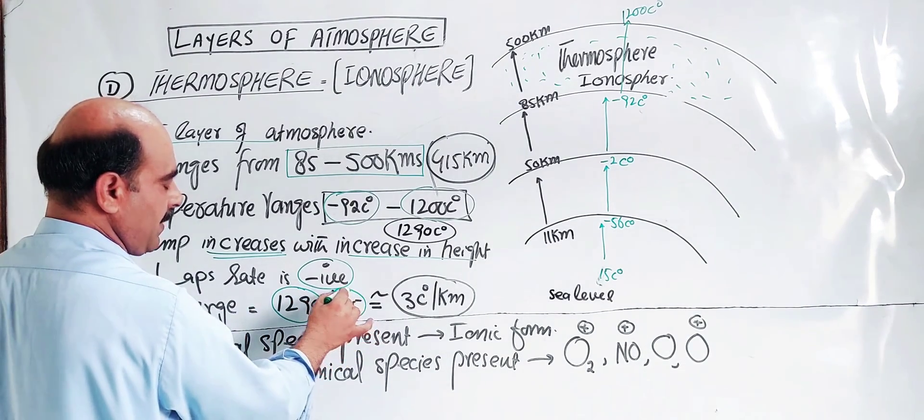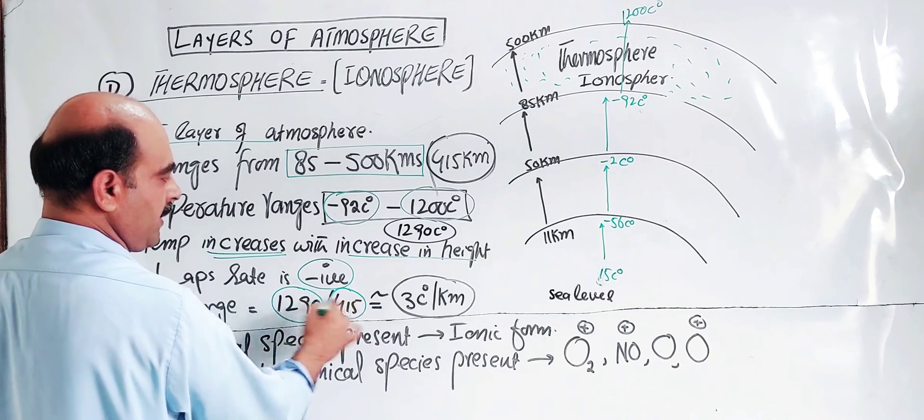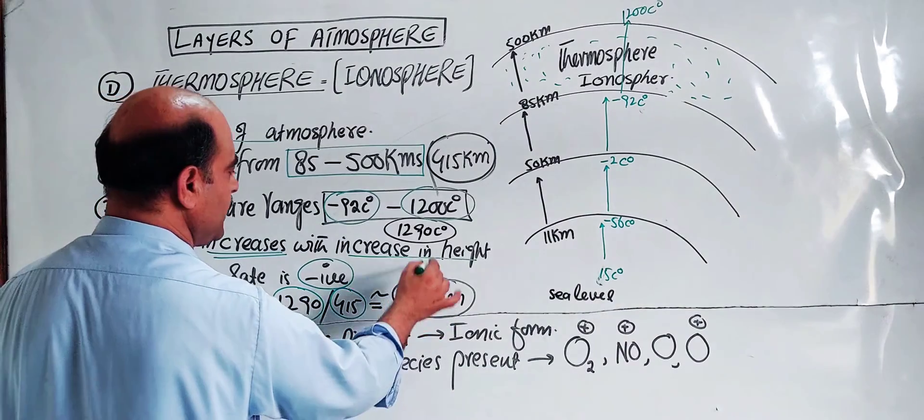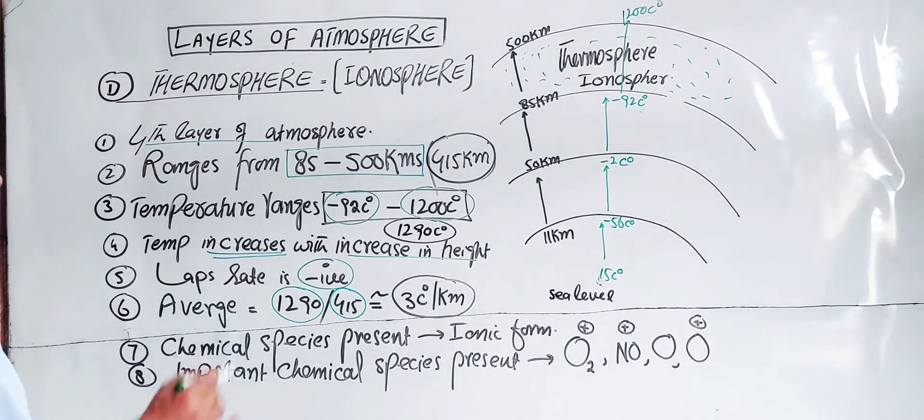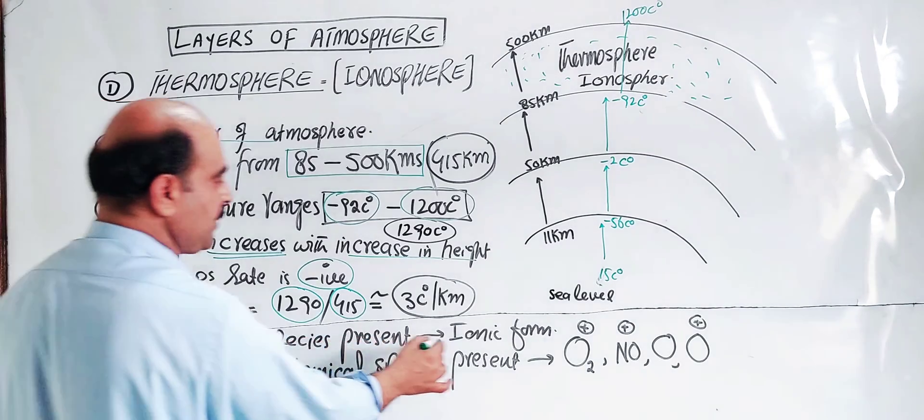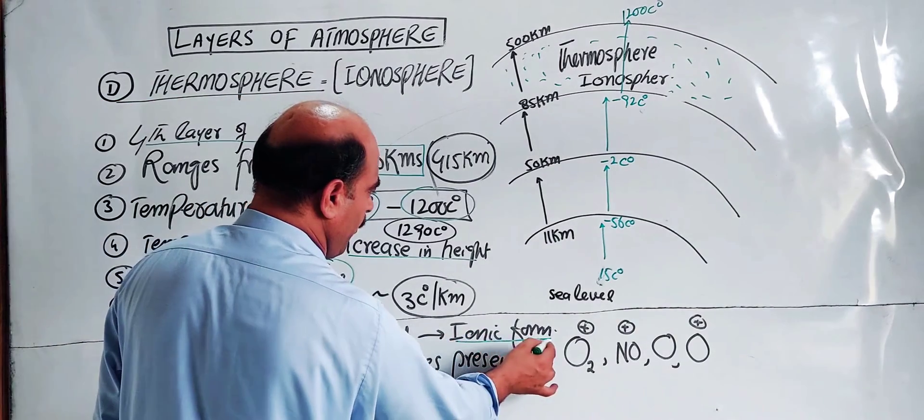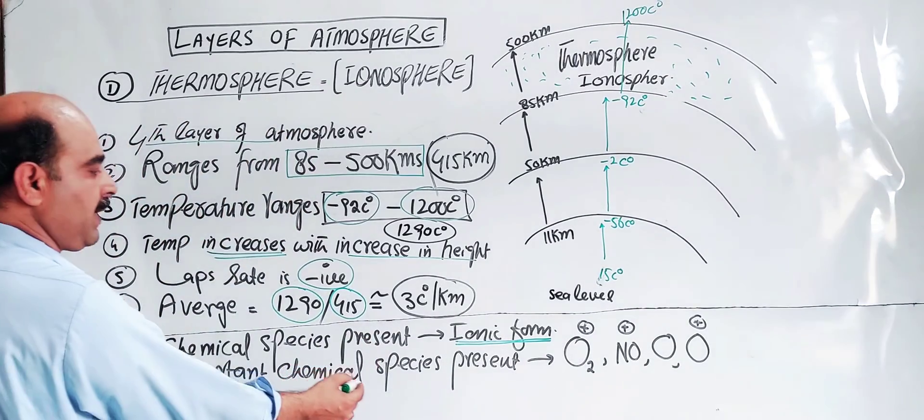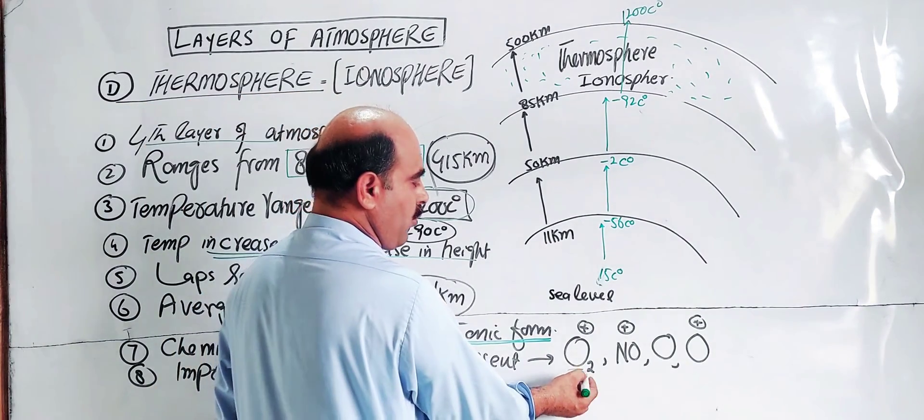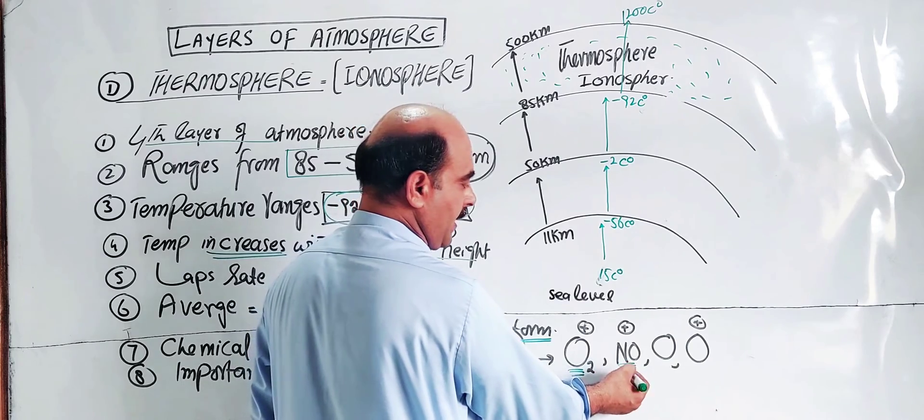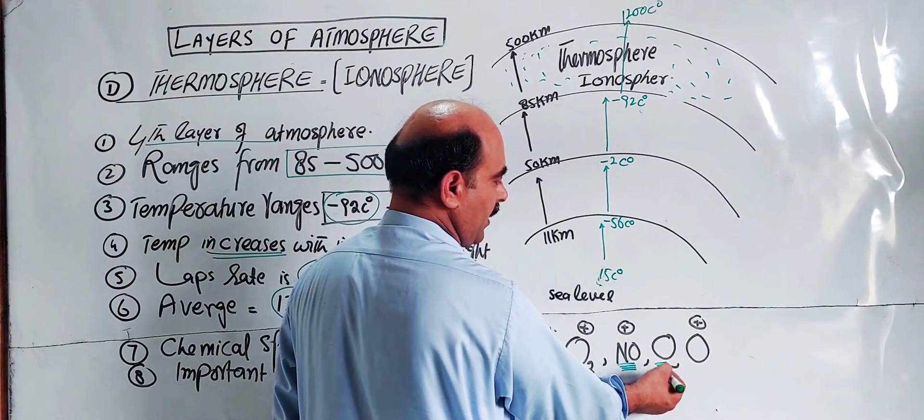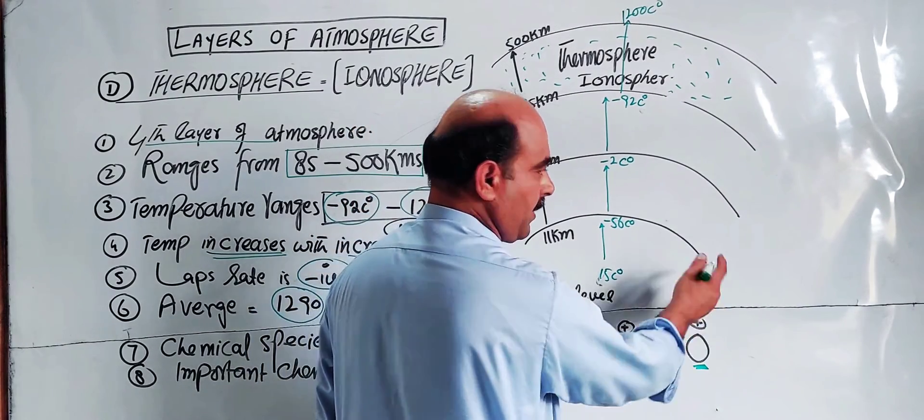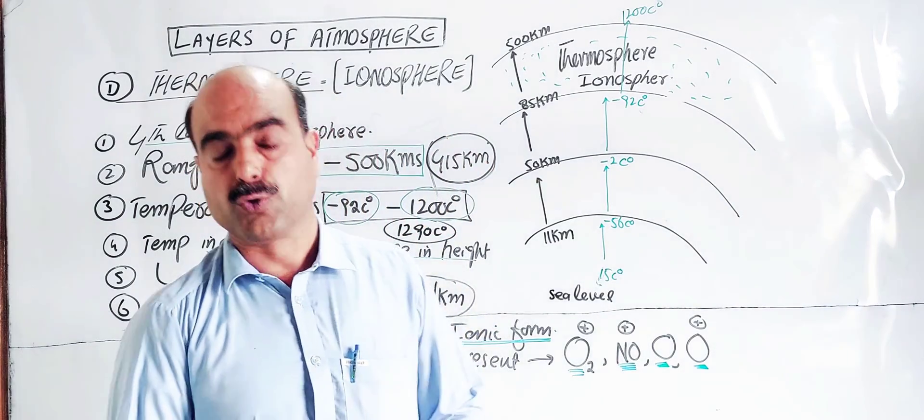The lapse rate is negative. Average increase in temperature is 3 degrees C per kilometer. Chemical species will be mostly in ionic form. Important chemical species present: O2 ionic state, nitric oxide ionic state, atomic oxygen, and atomic oxygen in ionic form.